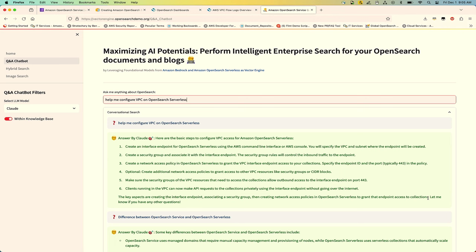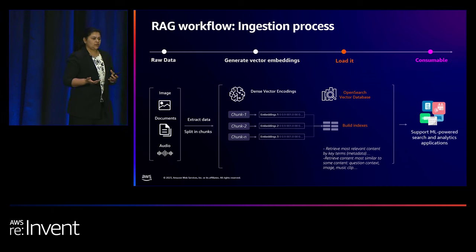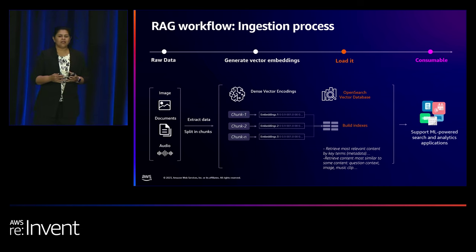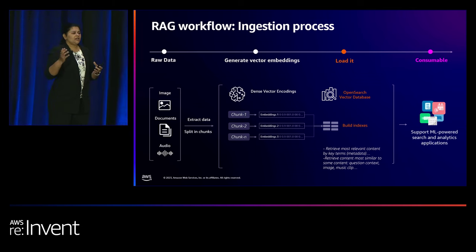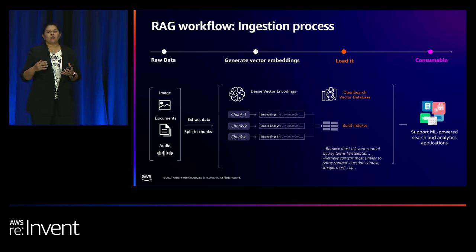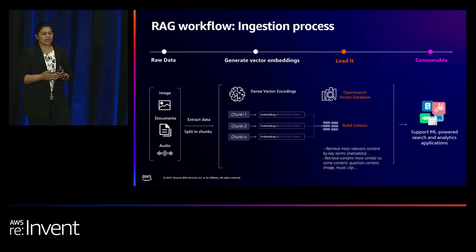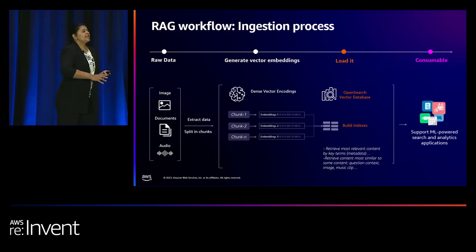There are two ways to build search applications. One is fine-tuning the model, where you pre-train the model with your data. Fine-tuning works great if your data is relatively static — for example, analyzing your historical sales data. But when you're talking about information that's constantly changing and you want to keep it up to date, RAG — retrieval augmentation generation — is the way to go. In RAG, you're improving the LLM responses with an external knowledge base.